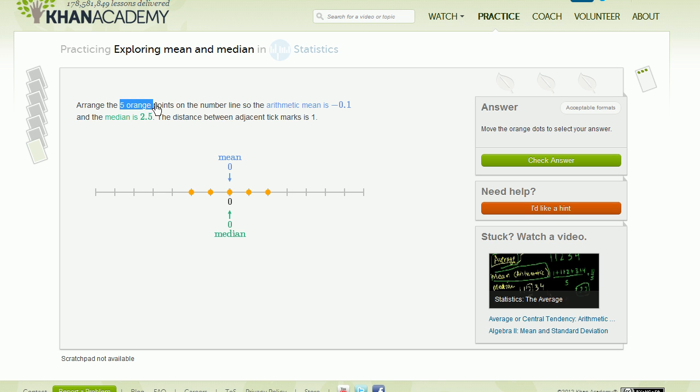Arrange the five orange points. So these are the orange points right over here. On the number line, so the arithmetic mean is negative 0.1. Arithmetic mean is really kind of what we traditionally view as the average. It's the average. You add up the numbers and divide by the number that you have.